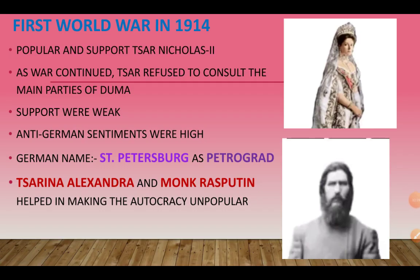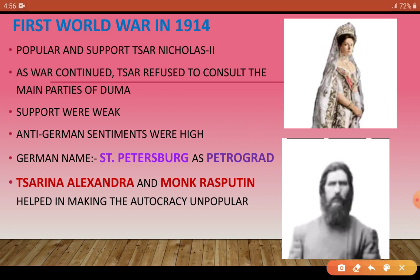When the war started, Russia's population first supported their king — Tsar Nicholas II. But as the war continued, Tsar Nicholas stopped consulting the Duma's main parties and took all decisions himself, reducing his popular support. Anti-German sentiments increased greatly among the people. Because of this, people renamed St. Petersburg — which had a German name — to Petrograd.